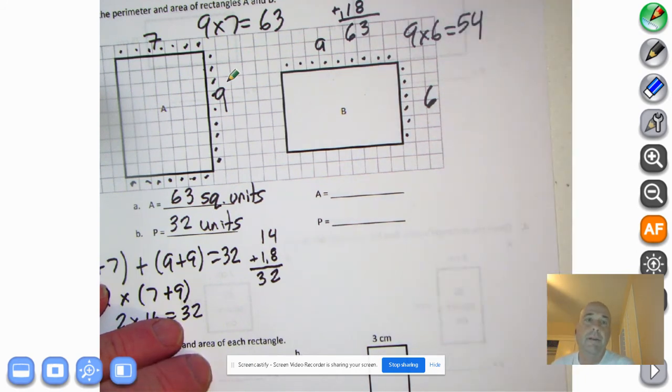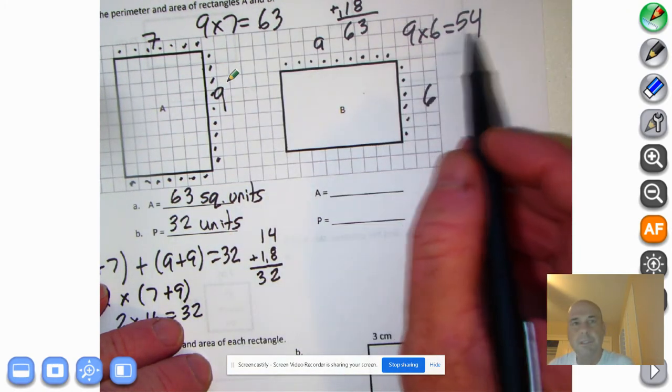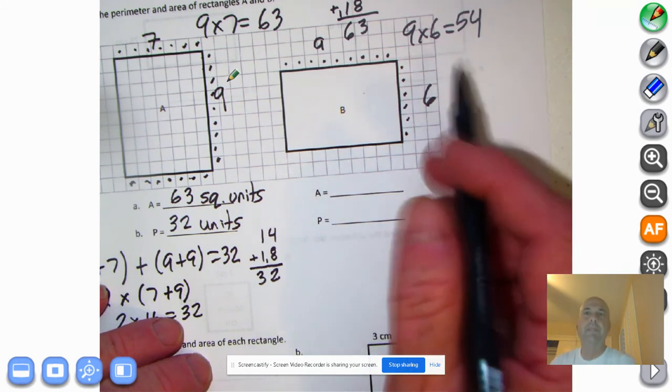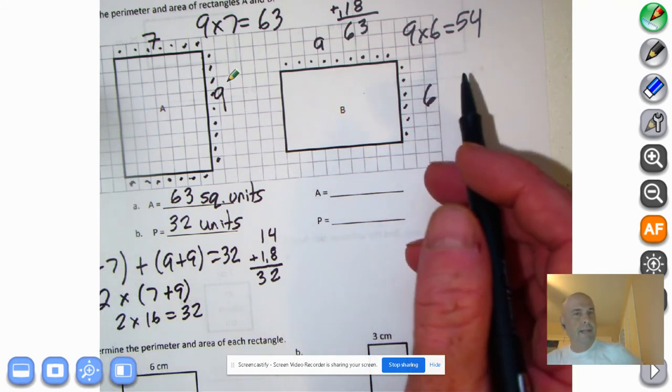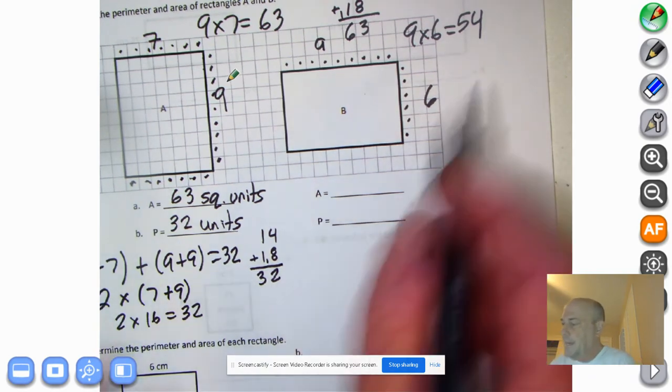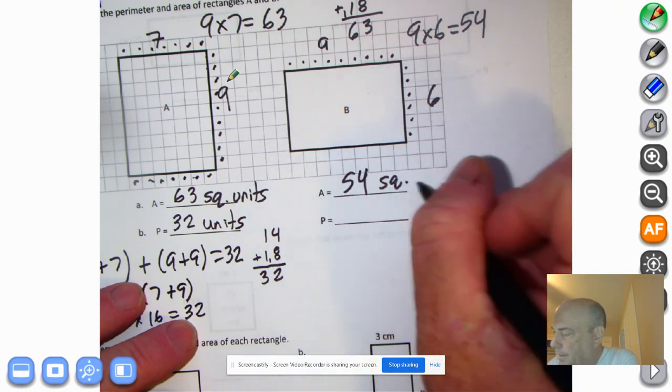And, you know, the funny thing is when you multiply nine by one, two, three, four, five, six, seven, eight, or nine, you can take the product or the answer. Six plus three is nine. Look at that. Five plus four is nine. So it's always going to work that way. So if your product doesn't add up to nine, if you have the two digits, then you don't have the right answer if you're multiplying nine by another single digit. So nine times six is 54. So we have 54 square units.